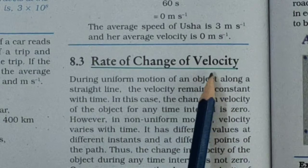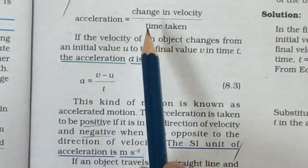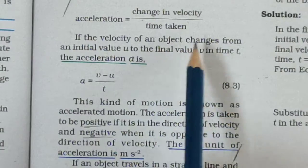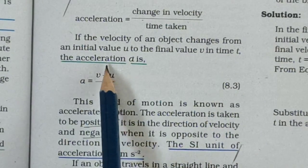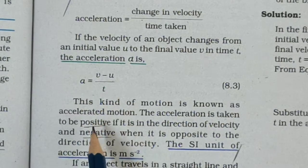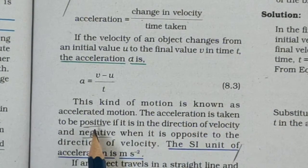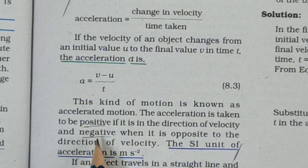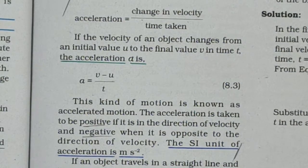Rate of change of velocity is acceleration. Acceleration is equal to change in velocity divided by time taken. If the velocity of an object changes from an initial value u to the final value v in time t, then acceleration a is given by a = (v − u) / t. This kind of motion is known as accelerated motion. Acceleration is taken to be positive if it is in the direction of velocity, and negative when it is opposite to the direction of velocity. The SI unit of acceleration is meter per second square.